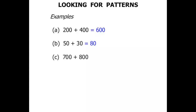700 plus 800. Again, we're dealing with hundreds, so 7 plus 8 is 15. We're dealing with hundreds, we have two zeros. Let's put the two zeros there. Our answer is 1500, or another way of saying that, fifteen hundred.